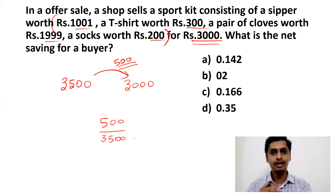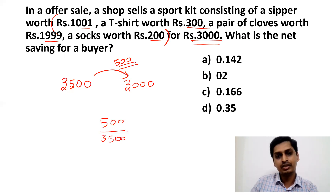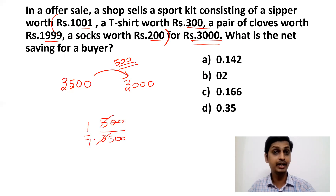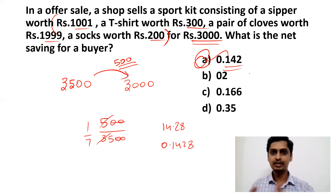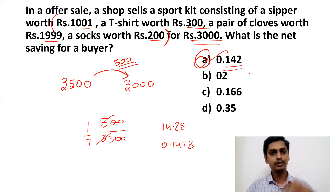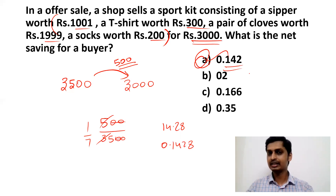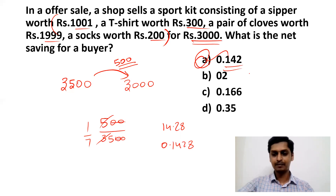The buyer saved ₹500 (i.e., 3500 − 3000 = 500). This ₹500 is what percentage of ₹3500? Cancelling: 500/3500 = 1/7 = 14.28%. But the answer options are in decimal form, so 14.28% = 0.1428, approximately 0.142. That is our answer. The shortcut fractions (1/7, 2/7, etc.) are included in the description — please have a look.